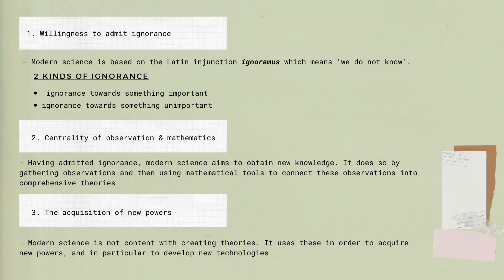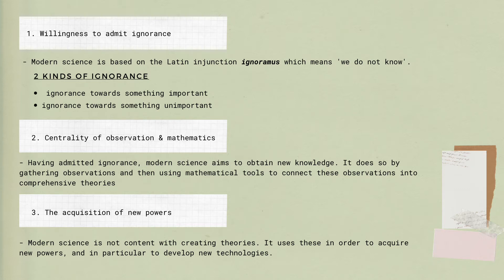Oftentimes, when we do not know something, we recognize that we are ignorant of it. Hence, we try to challenge ourselves even more by adding more questions to the problems that we have and by also trying to find answers for them. That's one of the advantages of using the scientific method. Second is the centrality of observation and mathematics. Modern science obtains knowledge through gathering observations and using mathematical tools. By first admitting that we are ignorant of something, we believe that we can find ways to solve any problem we have. The centrality of observation and mathematics plays a fundamental role in the actual resolution of those problems.